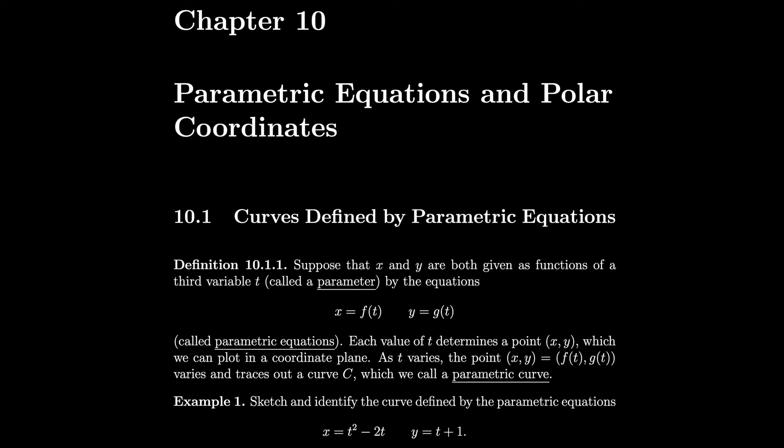So what's going on here is instead of having just a function of x where we graph y equals some function of x or x equals some function of y, each coordinate has its own function. We look at those two different functions and build up the coordinates bit by bit until we build up our curve. Let's do an example of that.